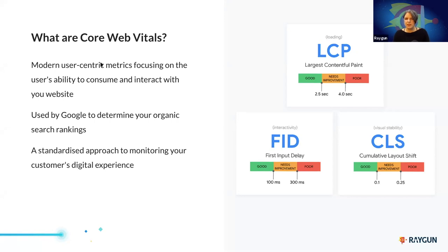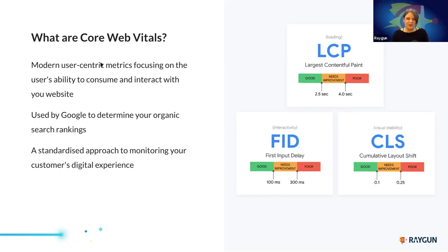Google has said they're going to use core web vitals for their search ranking algorithm. So yes, it's about user experience, but it will also have an effect on how you rank in Google search if you don't adhere to these new standards. While Google is emphasizing that the change is gradual, they announced these metrics a year early — quite unusual for them. They gave us a year to prepare, and that year has passed. Really about time to get into it.